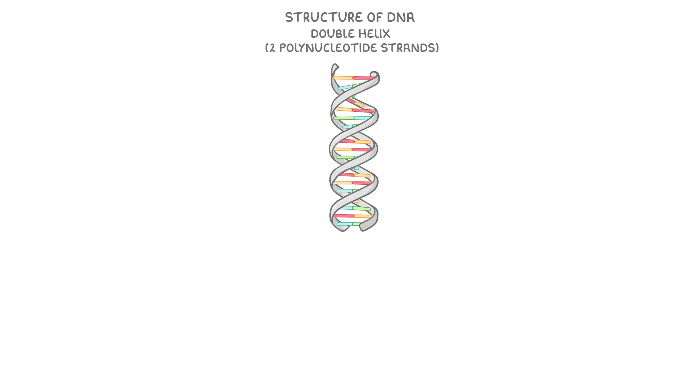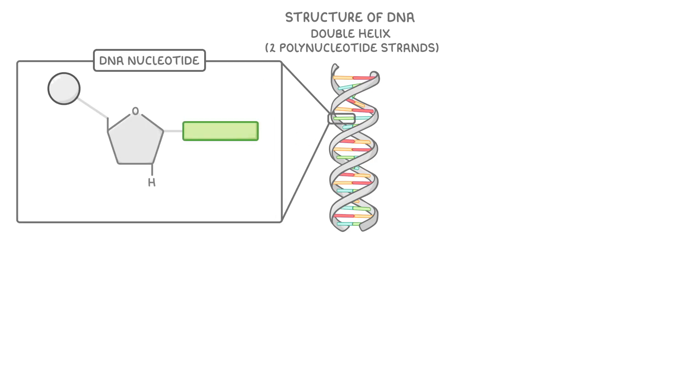Next, let's look at the structure of DNA, one of the most common examples of a nucleic acid. DNA is a double helix, which means it's like a twisted ladder with two polynucleotide strands. Each DNA nucleotide consists of a pentose sugar called deoxyribose, attached to a phosphate group on one side, and one of four nitrogenous bases on the other side.